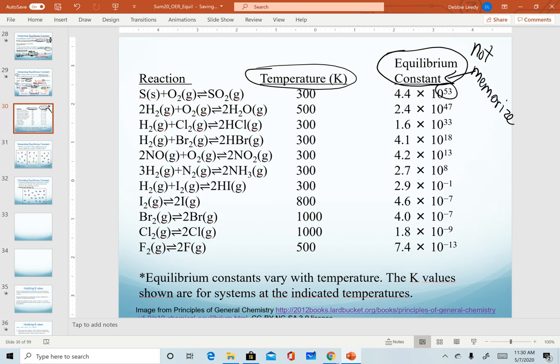These are just shown here to show you the range. And this is not the extreme, but just a selected group. So notice our largest one, most product favored here is 10 to the positive 53. The smallest one here that we have is a negative 13. That is our most reactant favored. And again, this is definitely not the smallest. We have an example in chapter 15 where we'll see a minus 33 for our exponent.